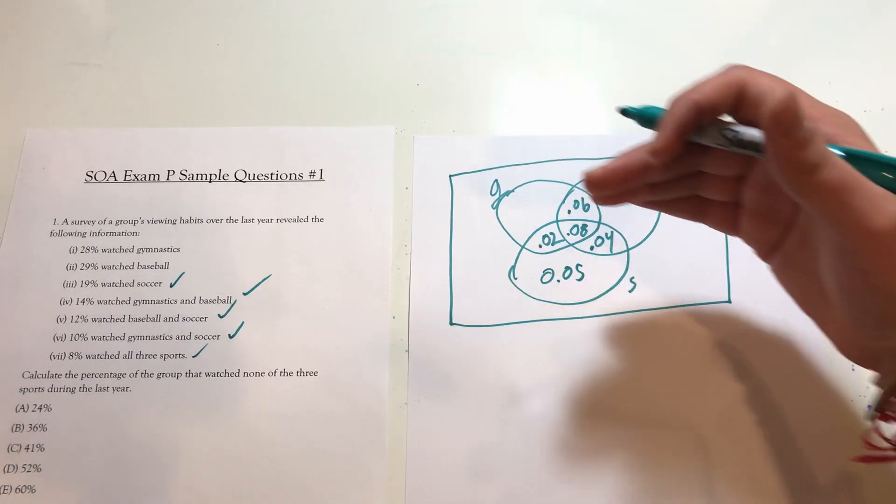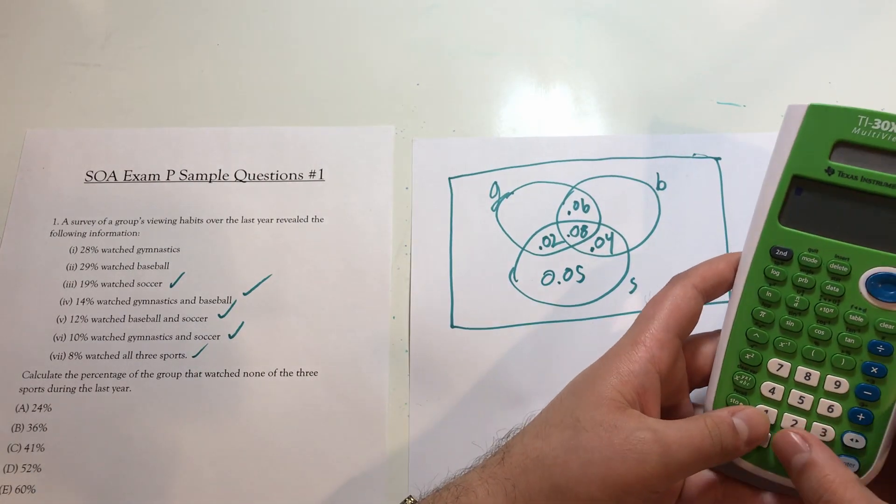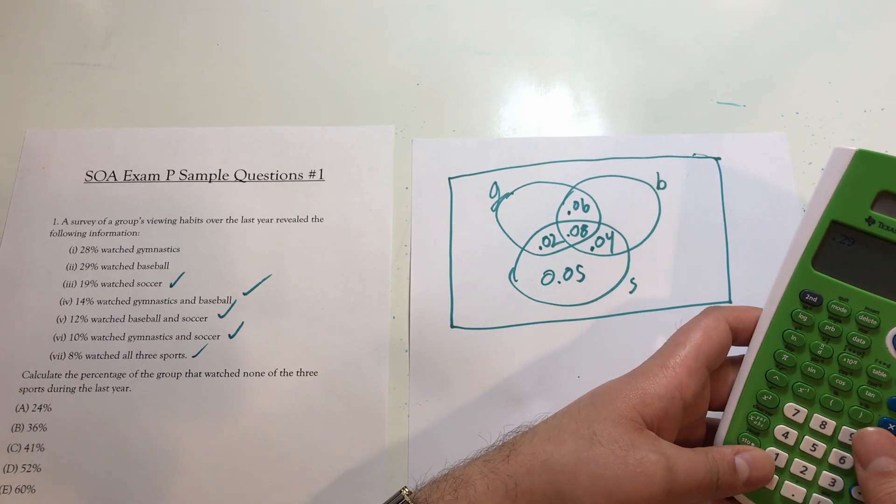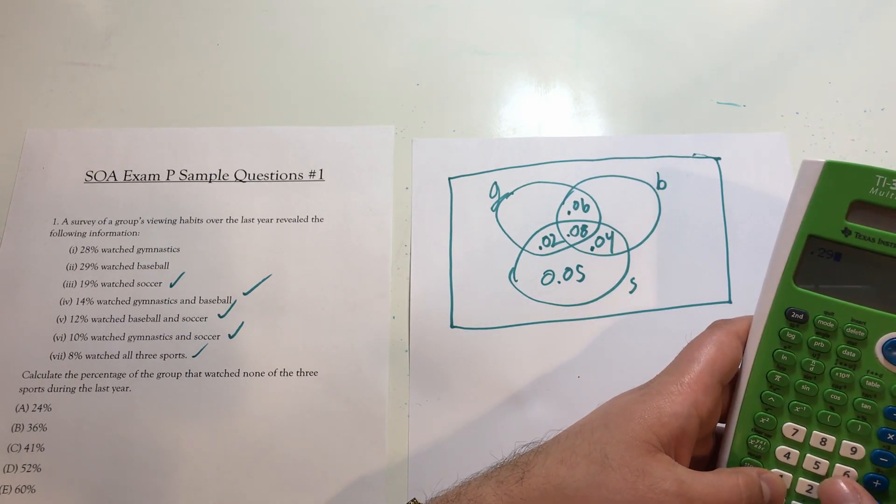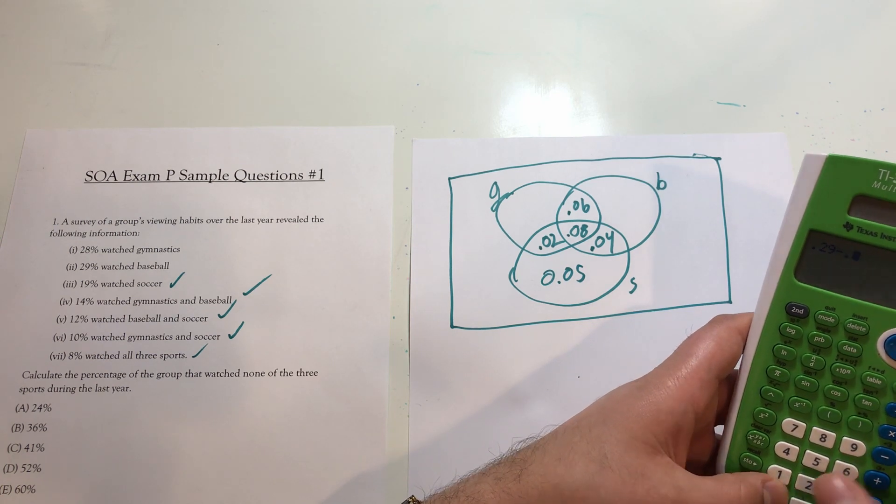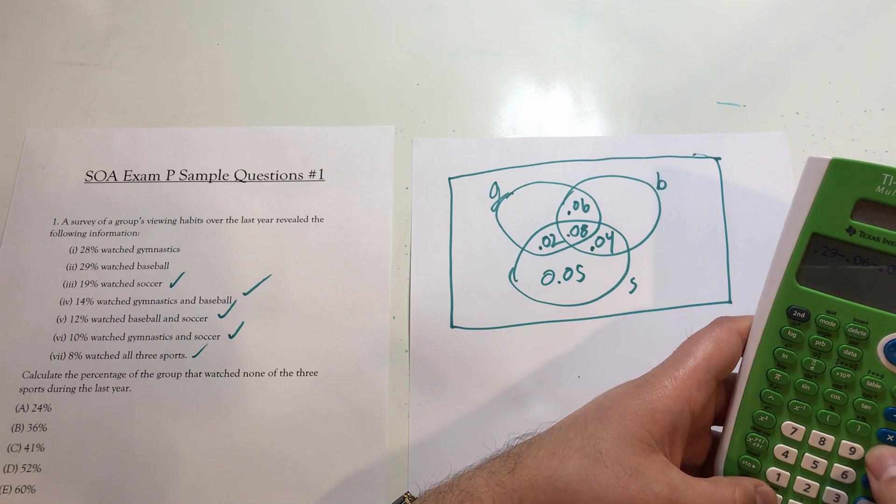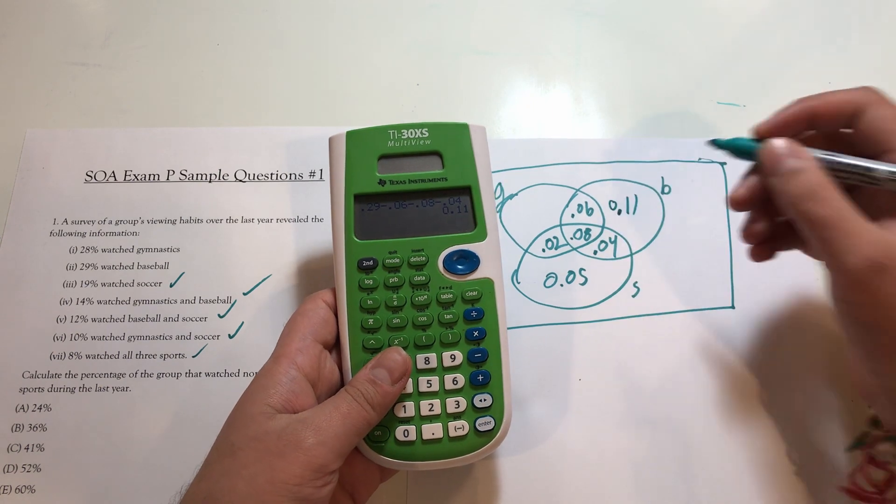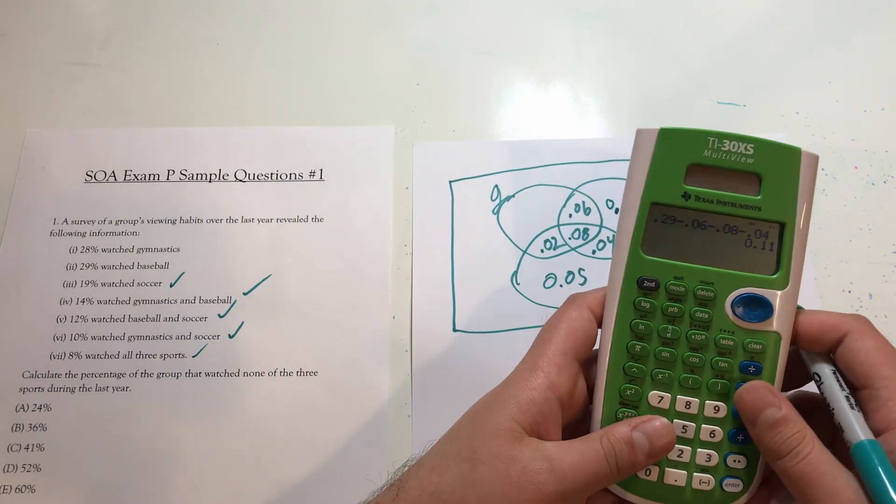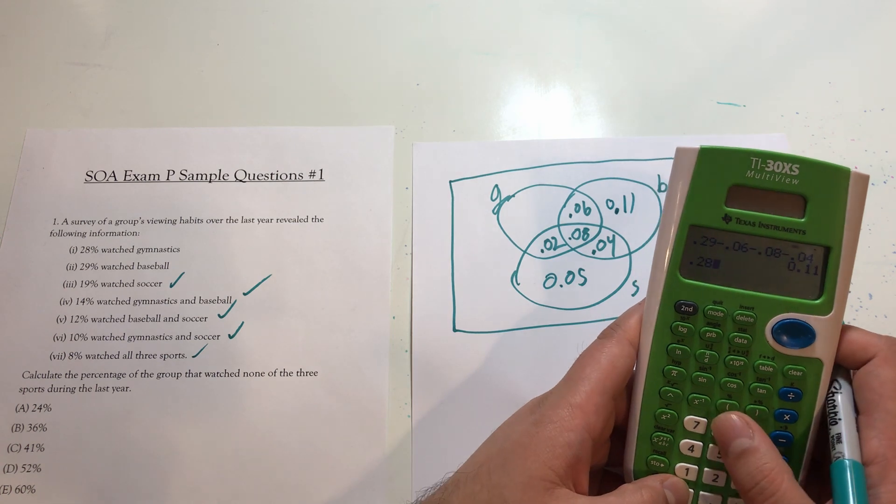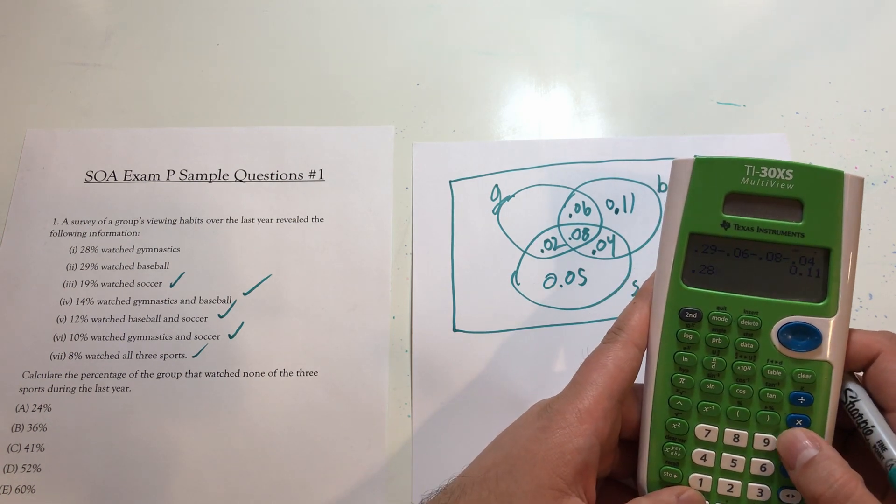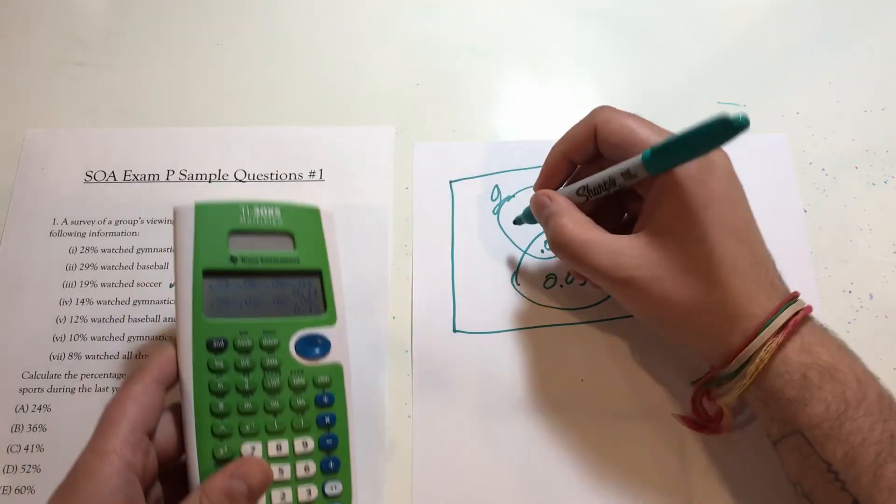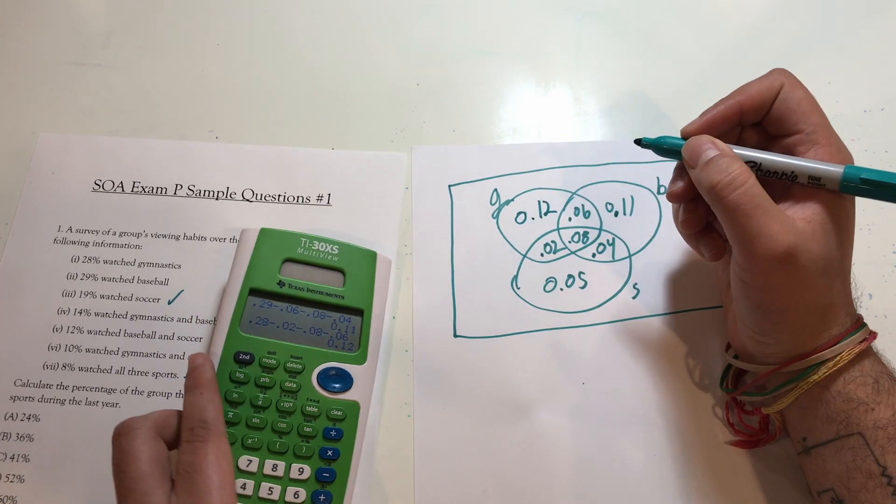Now I'm going to do the same thing for baseball and gymnastics. So 29% of people watched baseball, 0.29 minus these parts, because I just want the people that only watched baseball. And that's going to be minus 0.06 minus 0.08 minus 0.04. And that gets us 0.11. Doing the same thing with gymnastics, and that gets us 0.28 minus 0.02 minus 0.08 minus 0.06. And that gets us 0.12.